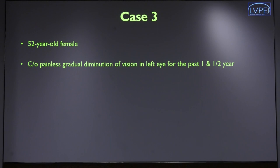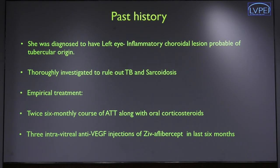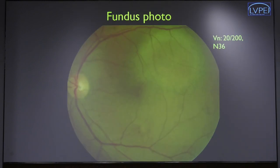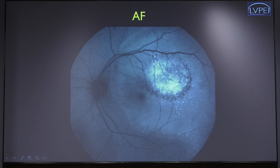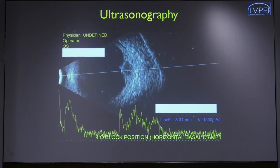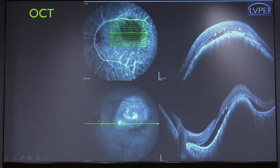This third case was a 52-year-old lady with gradual diminution of vision in the left eye for the last one and a half years. She had been investigated for all causes of ocular inflammation including TB and sarcoidosis, had received two six-month courses of ATT with steroids, and also anti-VEGF injections due to suspicion of CNVM. There is a well-demarcated lesion in the eye. Autofluorescence showed central hyper-autofluorescence with surrounding areas. Ultrasound showed a well-defined lesion with central lucency, and OCT showed chorioretinal elevation with subretinal fluid and disruption of photoreceptors — clues pointing away from uveitis toward an underlying tumor.